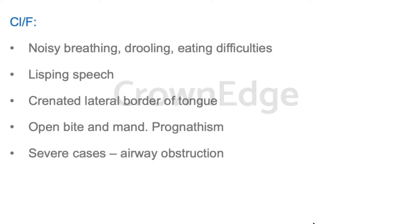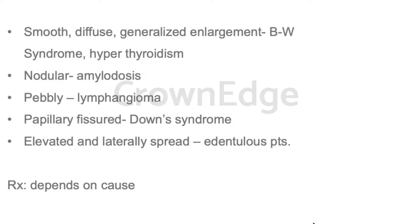Some clinical features: if a large tongue is present inside the oral cavity, it will definitely cause obstruction to the airway, leading to noisy breathing, drooling of saliva, eating difficulties, and lisping speech. Because of the pressing of the teeth on the tongue, we see crenated lateral borders. It will lead to open bite and mandibular prognathism, and in severe cases, dyspnea due to airway obstruction.